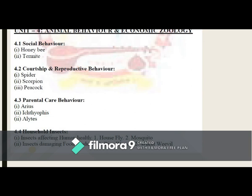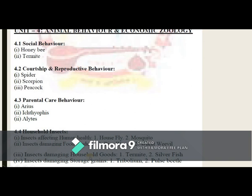In Unit 4, you study animal behavior and economic zoology. Subunit 4.1 is social behavior of honeybee and termite. Subunit 4.2 is courtship and reproductive behavior of spiders, scorpions, and peacock. Subunit 4.3 covers parental care behavior in Ichthyophis and salamanders. Subunit 4.4 covers household insects affecting human health — houseflies and mosquitoes — and insects damaging food products such as rice weevil and wheat weevil, insects damaging household goods like termite and silverfish, and insects damaging stored grain.